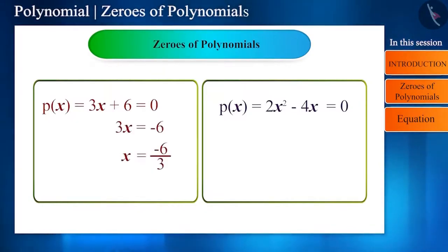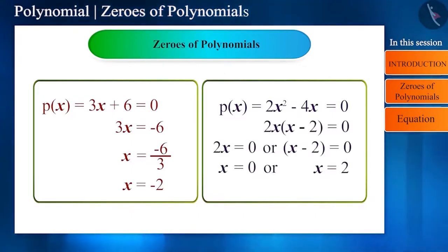Solving the first polynomial by equating it to 0, we get x = -2. Similarly, on solving the second polynomial, we will get x = 0 or x = 2. The zero of a polynomial can also be 0, but it is not always necessary to be 0.